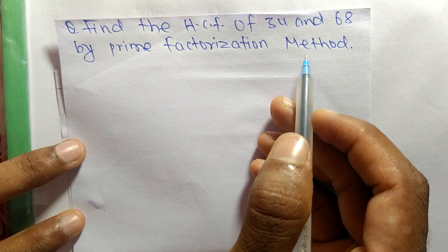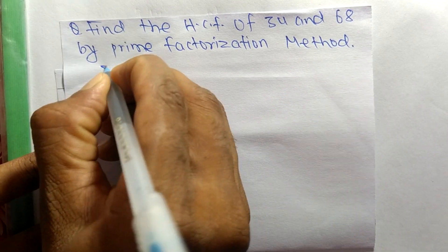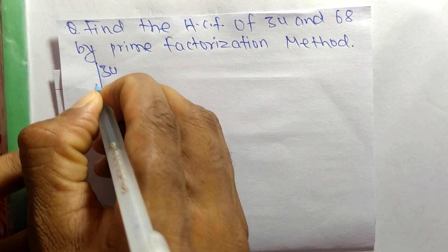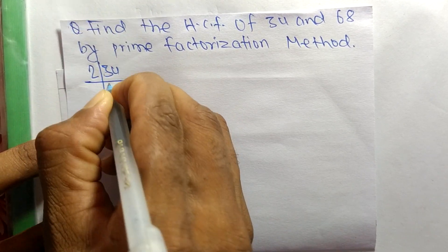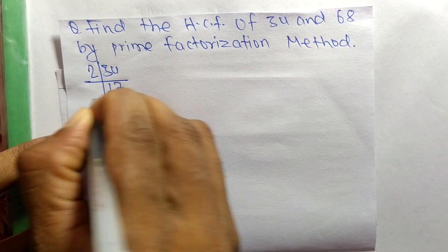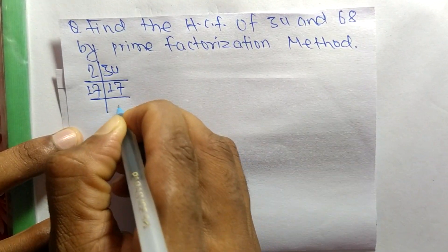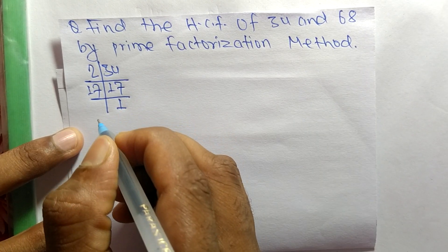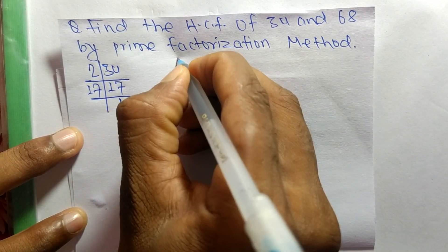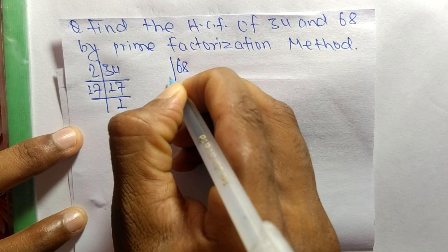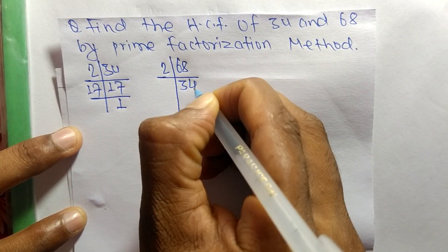First, we find out the prime factors of 34. So it is 2 times 17 equals 34, and 17 times 1 equals 17. The prime factors of 68 are 2 times 34 equals 68.